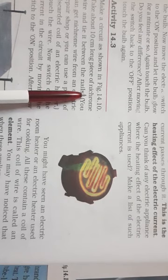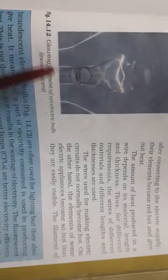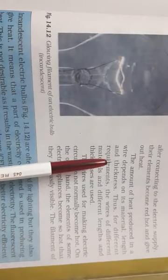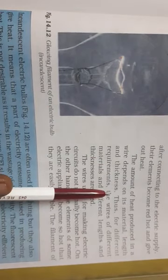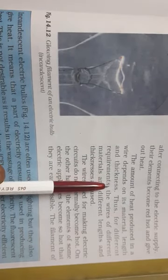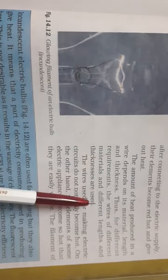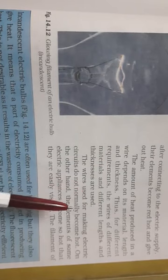Usually the nichrome metals, nichrome elements are used in all these elements which become very hot. So the amount of heat produced in any wire depends on the material, the length and the thickness of the wire. According to our requirement, the wires of different materials and different lengths or thickness are used.